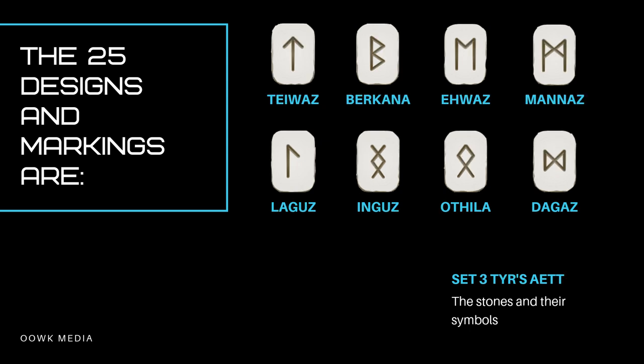Set 3 — Tyr's aett: Tiwaz, Berkano, Ehwaz, Mannaz, Laguz, Ingwaz, Othala, Dagaz.